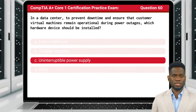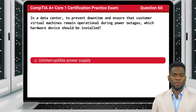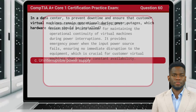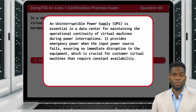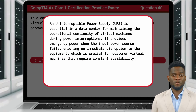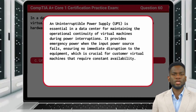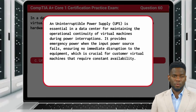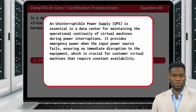The answer is C: Uninterruptible power supply. A UPS is essential in a data center for maintaining the operational continuity of virtual machines during power interruptions. It provides emergency power when the input power source fails, ensuring no immediate disruption to the equipment, which is crucial for customer virtual machines that require constant availability.